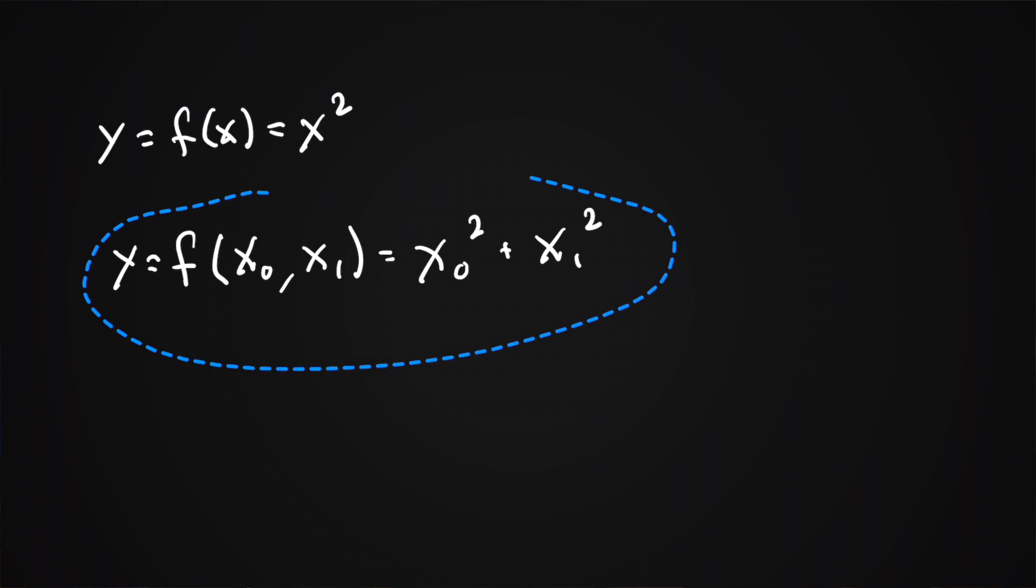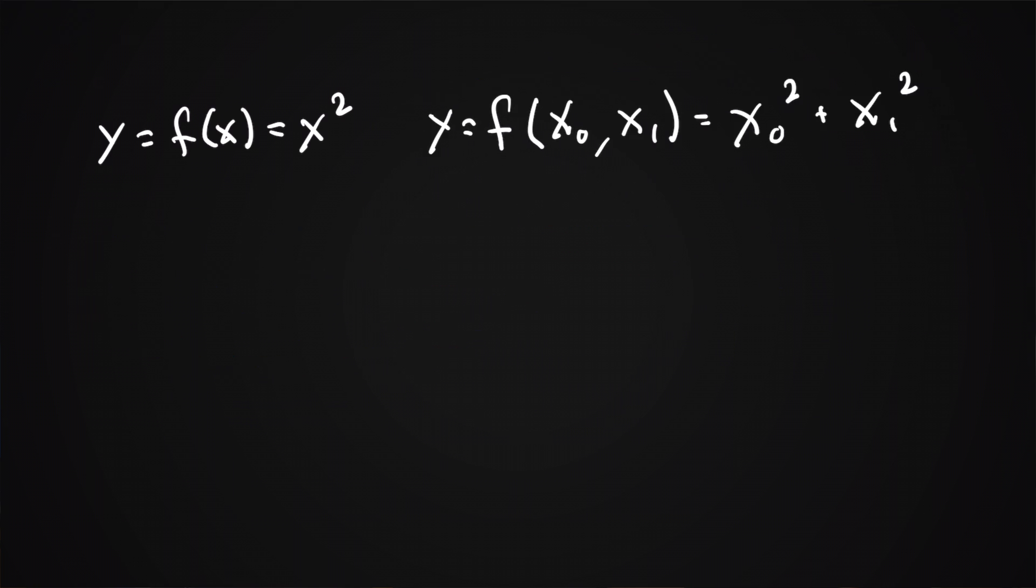So previously our graph looked like this. But now since there's two variables, our graph will look something like this, and this creates some sort of cup shape. And then this is y and this is x0 and this is x1.